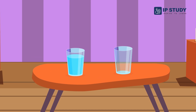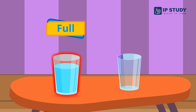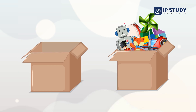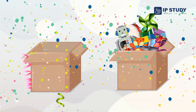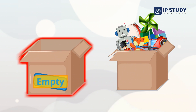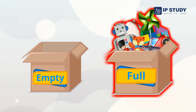Look at these glasses — the first glass is full with water and the second glass is empty. Now, can you tell me which box is full and which box is empty? That's right! The first box is empty and the second box is full with toys.